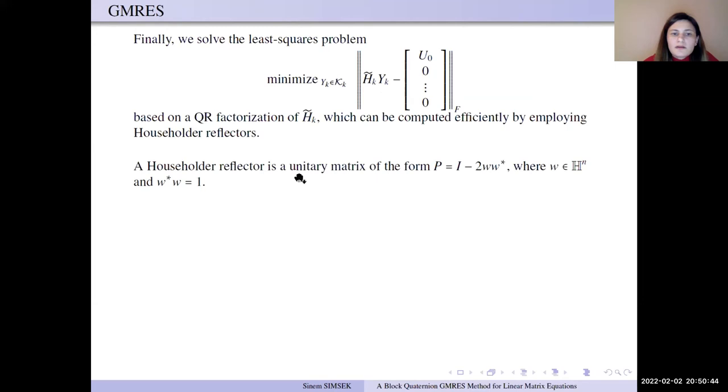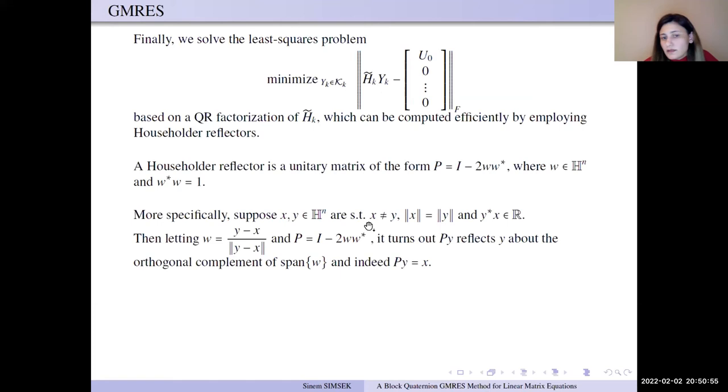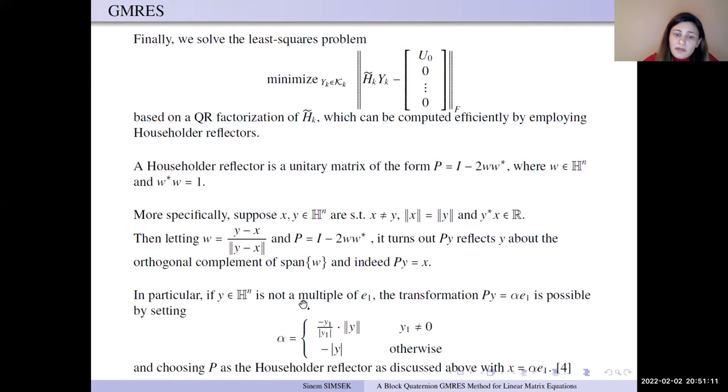We apply the Householder reflector. A Householder reflector matrix is unitary matrices. More specifically, for x and y not equal, we want to find the unitary matrices defined as identity minus 2ww*. In quaternion, y is not a multiplication of x, so we can choose alpha like this form.